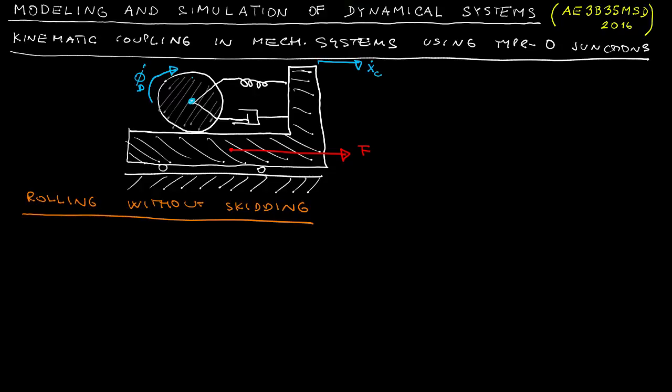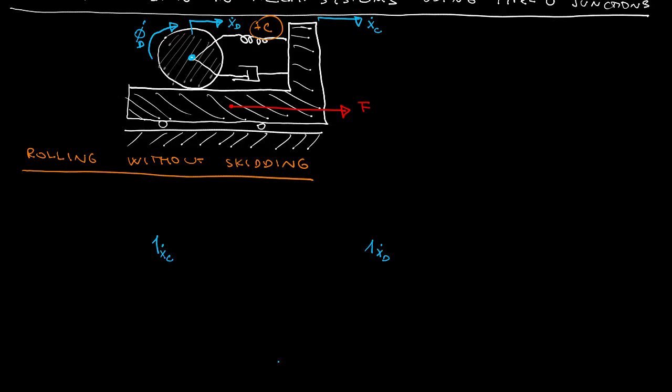So when modeling this using bond graph we need to identify all velocities here and we skipped one more. That means a translation velocity of the center of the mass. And we need to set the coordinate frame. And then the next step was to write down or to start drawing the bond graph.